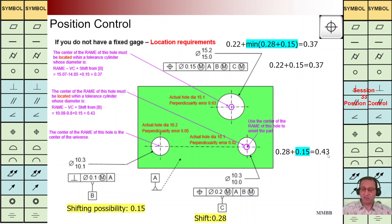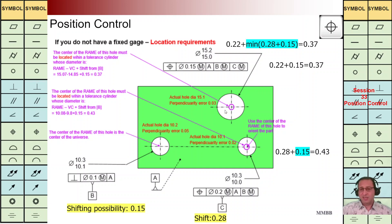That gives us 0.43. However, vertically the center or axis of this hole should be within a cylinder of diameter 0.28, but we have the possibility to shift the center of this hole if the first hole is exactly at the center. For the last one — the large hole — the maximum shifting value: TZ = 15.1 minus 0.03 gives 0.07, plus 0.15 = 0.22.